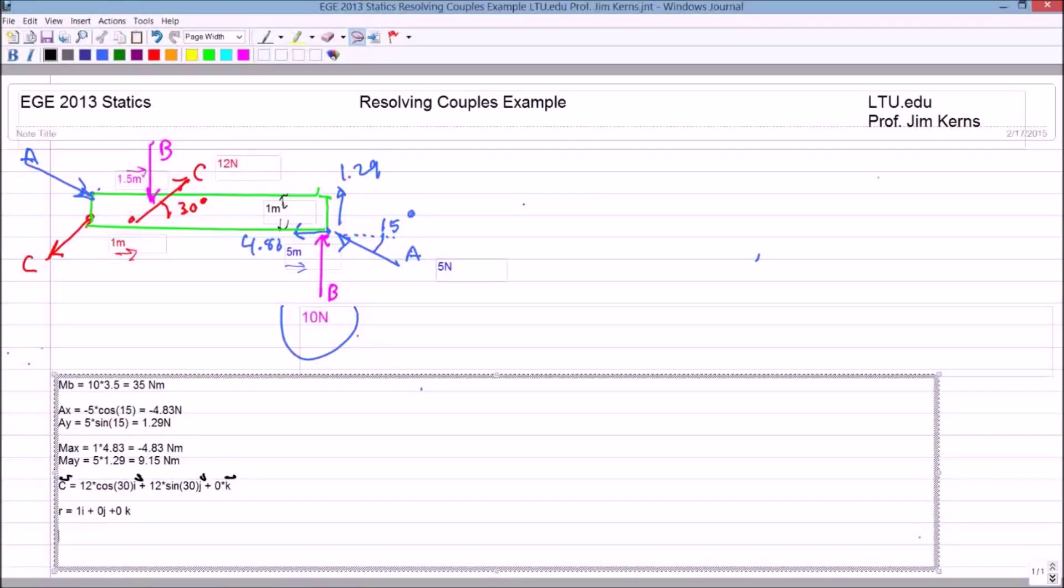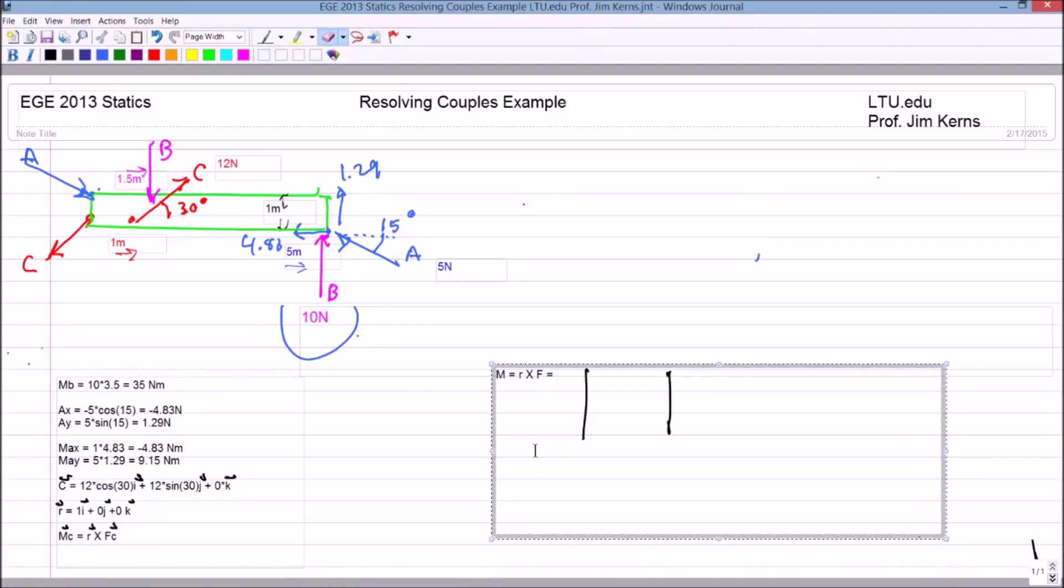And to calculate the cross product, I'm going to say that my moment for C is equal to the r vector for C times cross F of C. So we want to calculate our moment M as r crossed F.